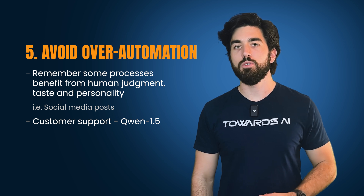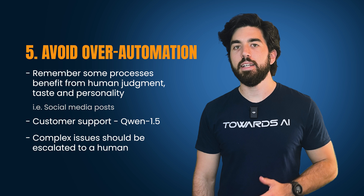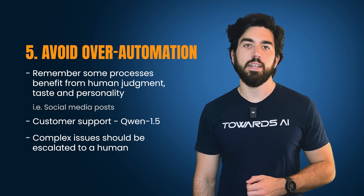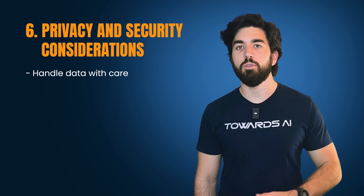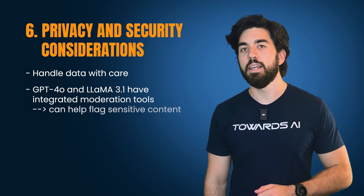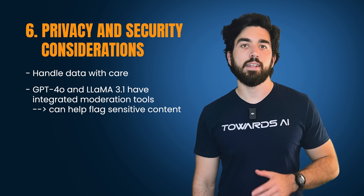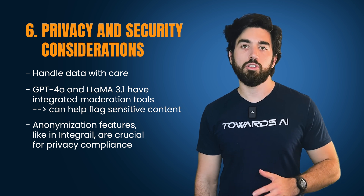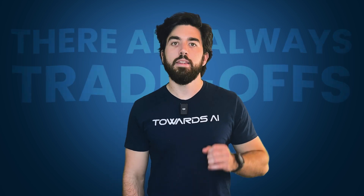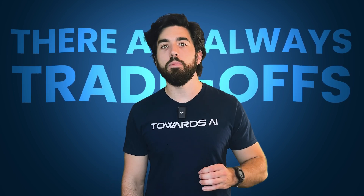For example, customer support can use Qwen 1.5 to provide instant answers, but complex issues should be escalated to a human to ensure accuracy and empathy. Always handle data with care, particularly with systems that interact with sensitive information. For instance, GPT-4o and LLaMA 3.1 have integrated moderation tools that can help flag sensitive content, but anonymization features like those in Integrale are still crucial for privacy compliance. So just remember, as cool as all this is, there are always trade-offs. Hallucination, over-automation and privacy issues need to be handled with care.